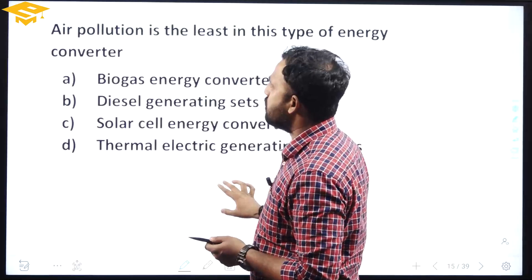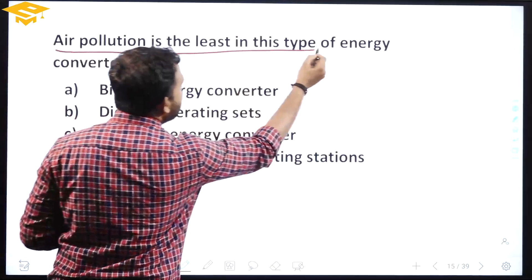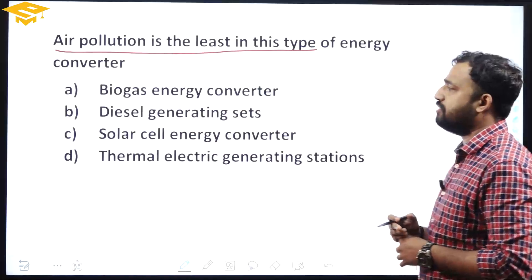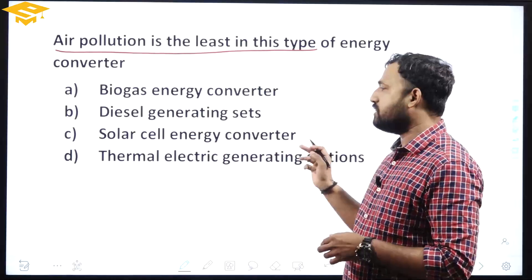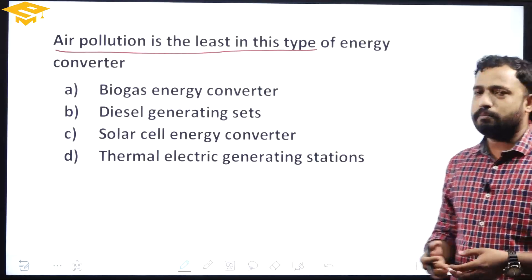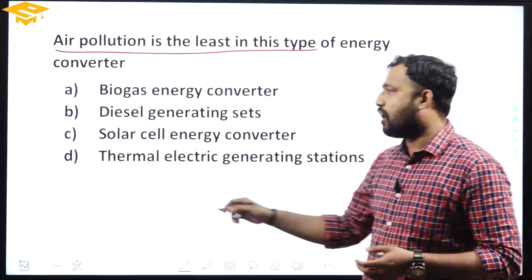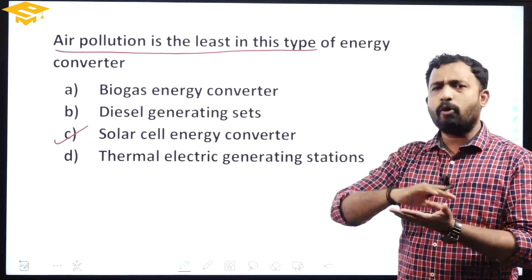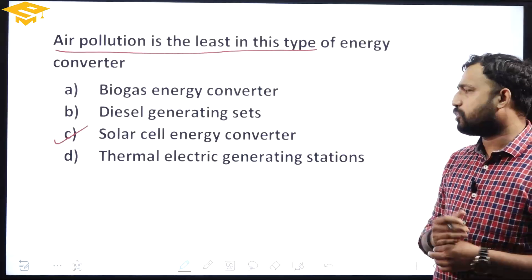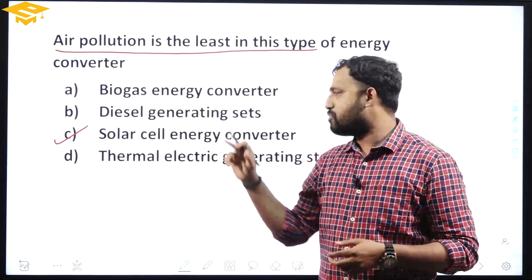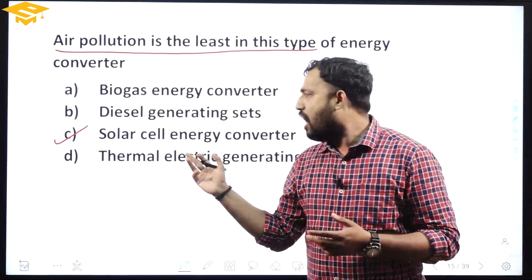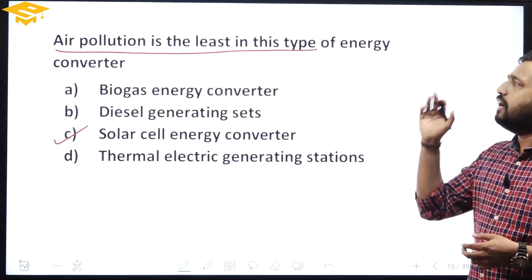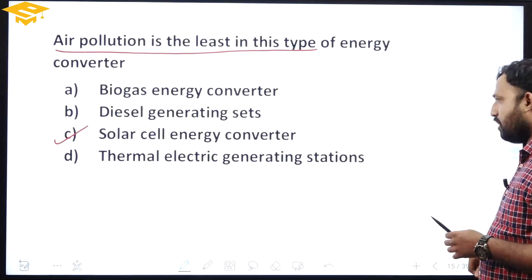Air pollution is least in this type of energy converter. Options: biomass energy converter, diesel generating cell, solar energy converter, thermal electric generating station. Solar cell energy converter has no air pollution because we use solar panels. Diesel generating and thermal stations use fuel and coal. So solar cell has the least air pollution.